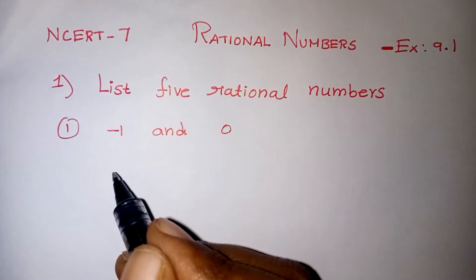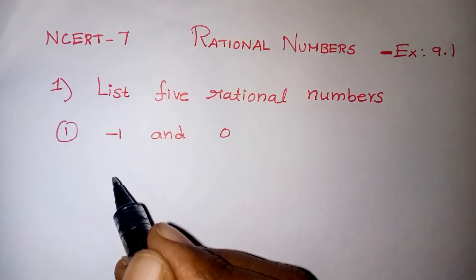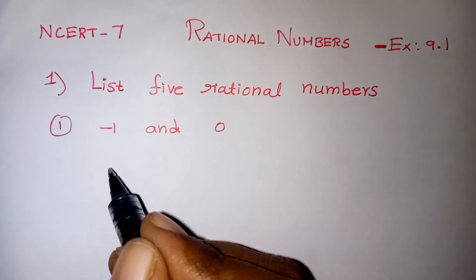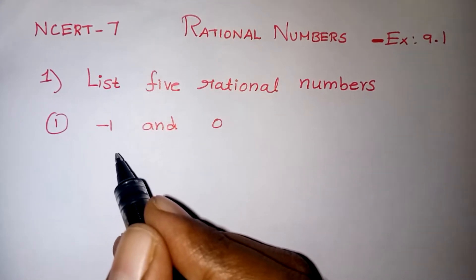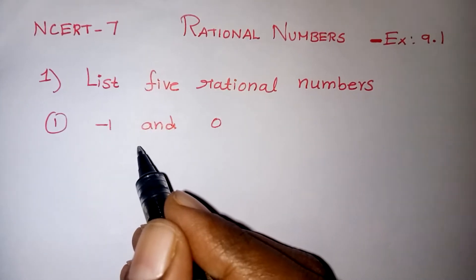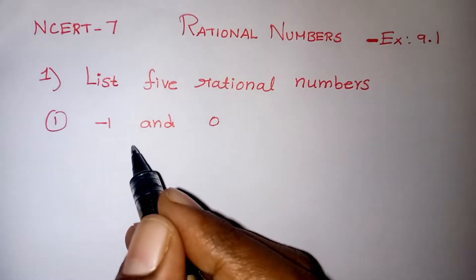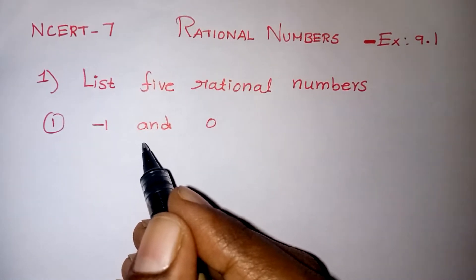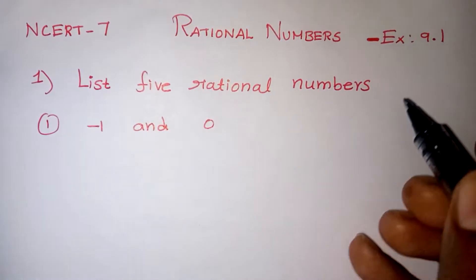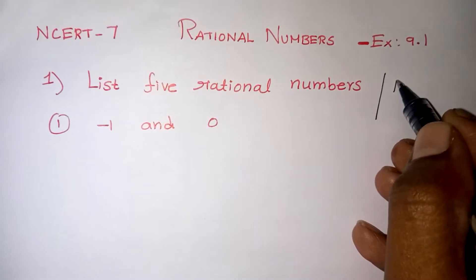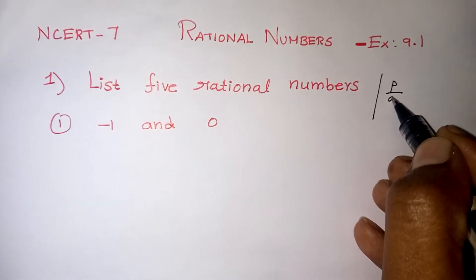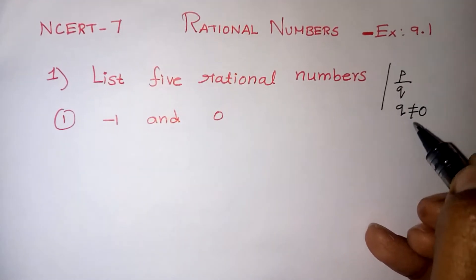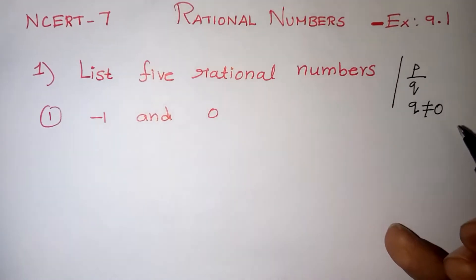Hi students, in this video we are going to learn rational numbers exercise 9.1, question number 1. The question asks us to list 5 rational numbers between minus 1 and 0. We all know that a rational number means the number should be in the form of p by q, where q is not equal to 0. This is the definition of a rational number.